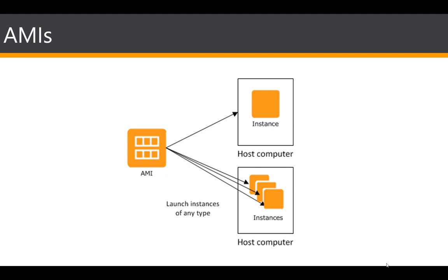An instance is basically a virtual server in the cloud; its configuration at launch is a copy of an AMI. You can launch different types of instances from a single AMI. The instance type essentially determines the hardware of the computer you're launching, and there are a number of instance types available in terms of hardware configuration.